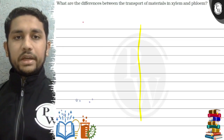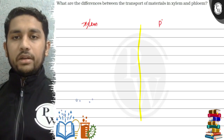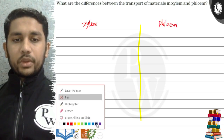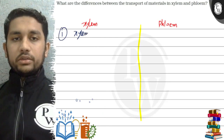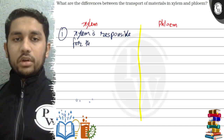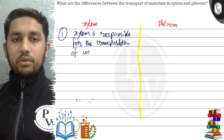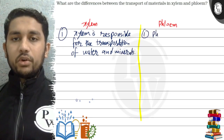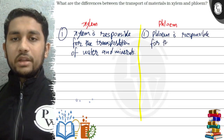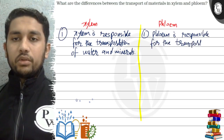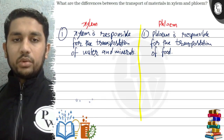First xylem, then phloem. Xylem is responsible for the transportation of water and minerals. Whereas phloem is responsible for the transportation of food.